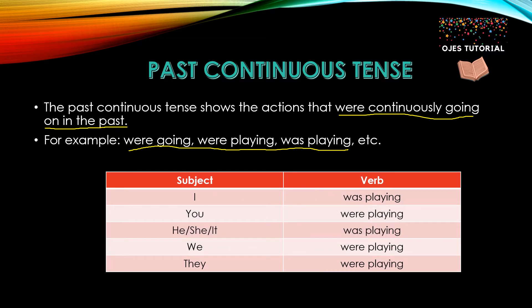Now, this is a table given according to the subject and the verb. As we can see, when the subject is I, we use the auxiliary verb was, and the tense form is was playing. And when the subject is you, we use the auxiliary verb were.